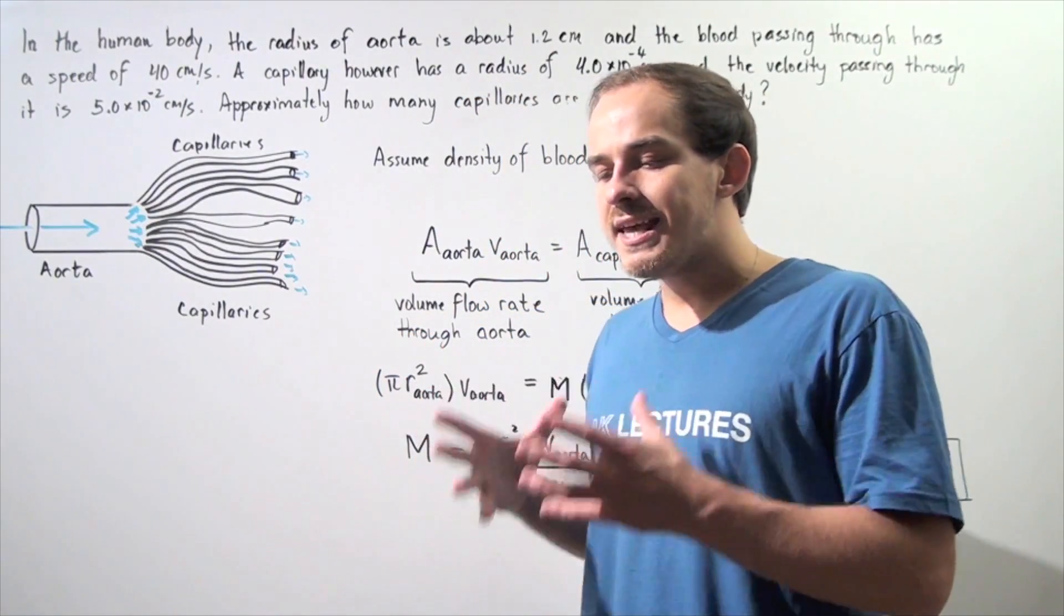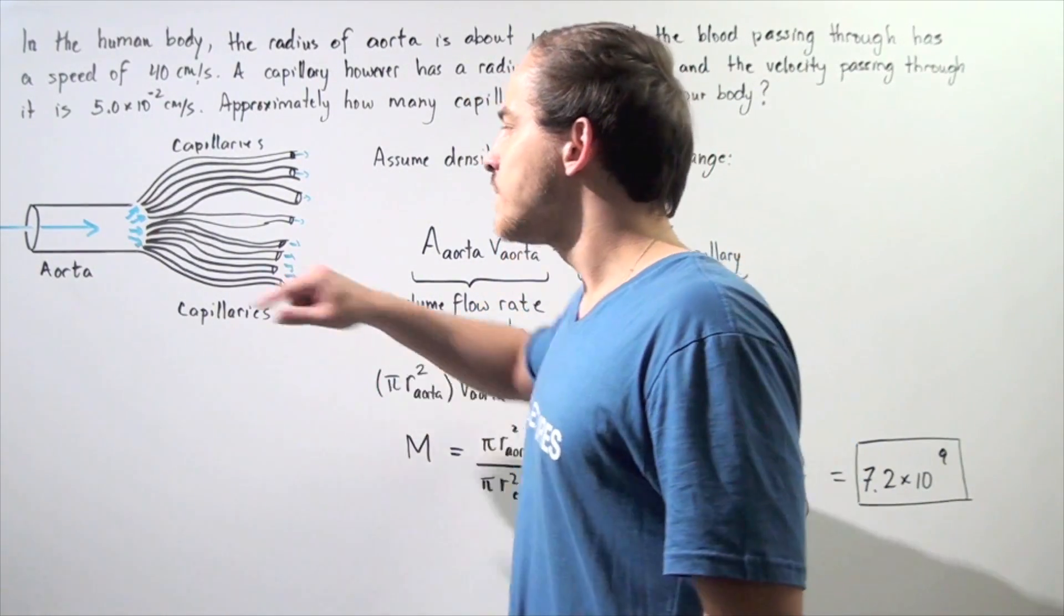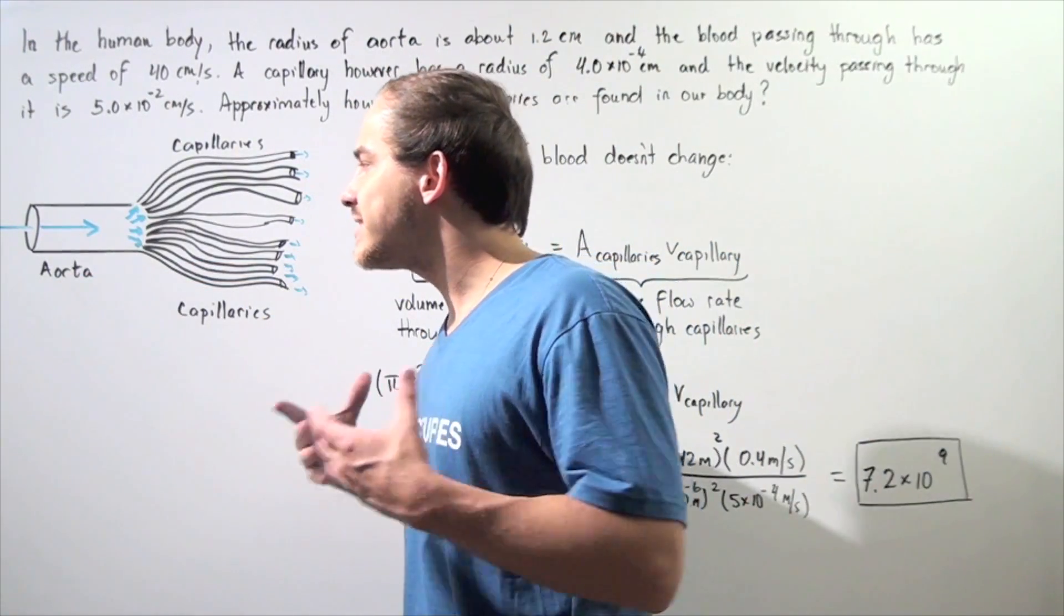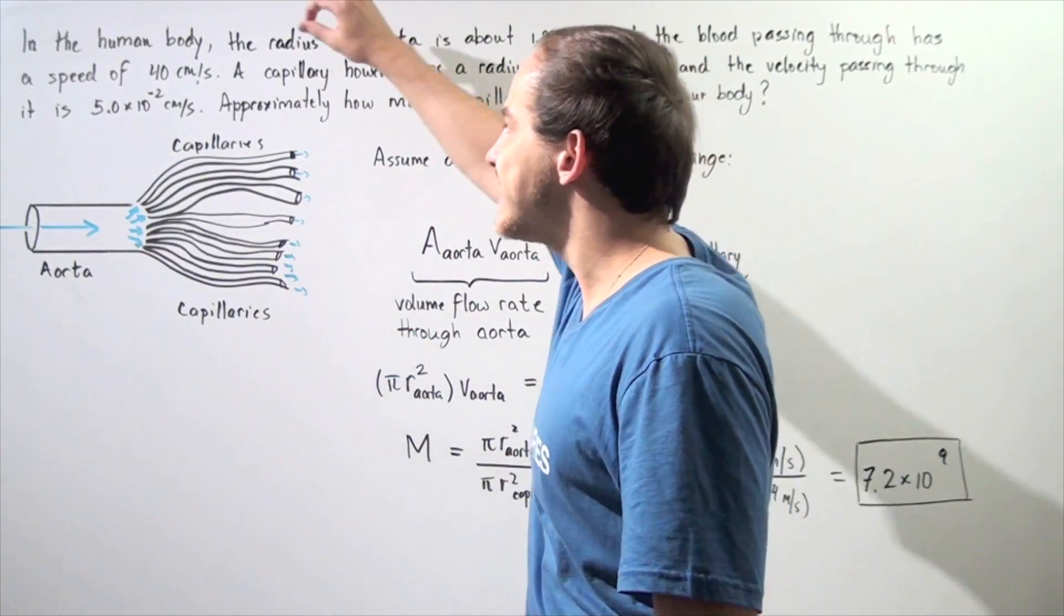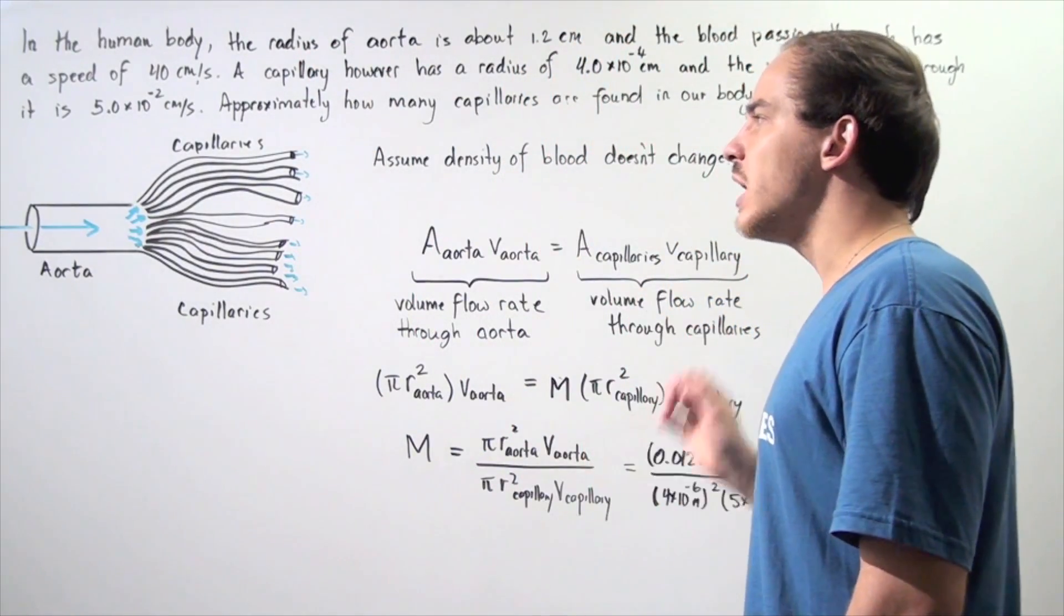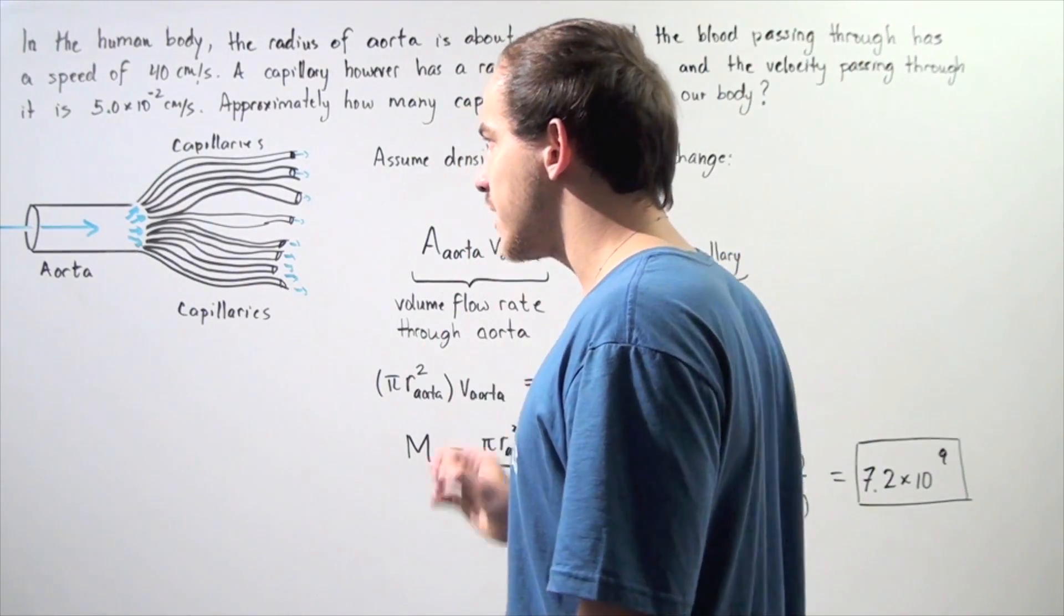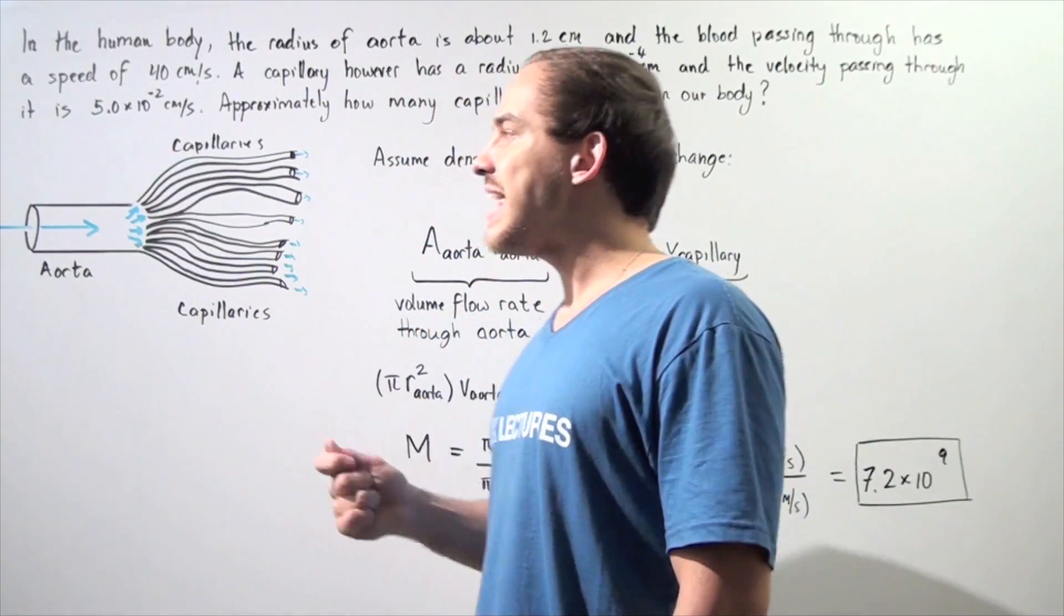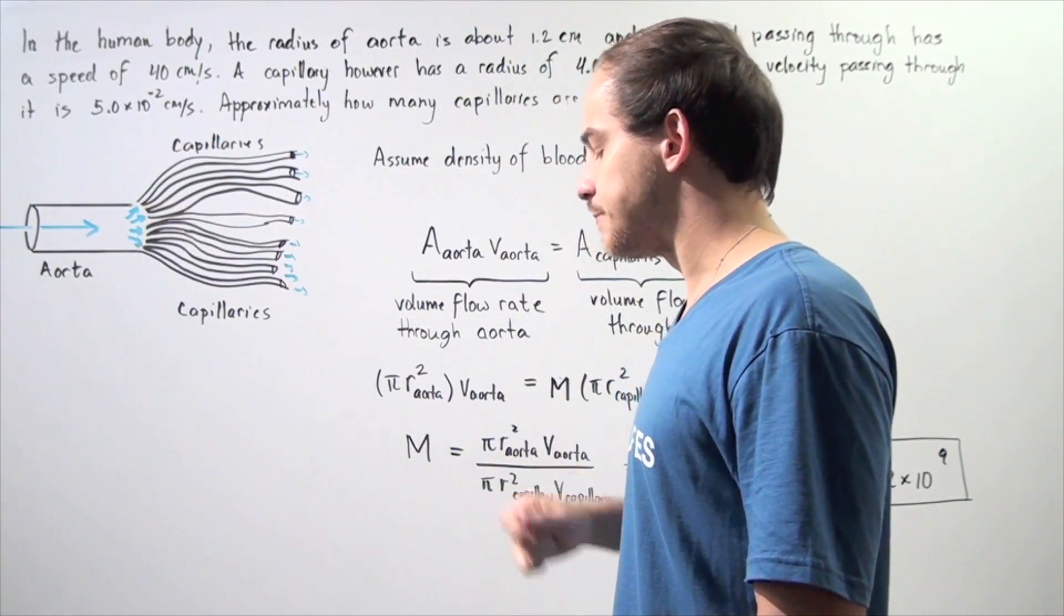The blood begins in the heart and travels through a single blood vessel known as the aorta. And then, that aorta divides and subdivides into many different small blood vessels known as capillaries. Capillaries are the smallest possible type of blood vessels found in our body. And in fact, it is within the capillaries that oxygen exchange and waste and nutrient exchange takes place between the organs and tissues and our blood vessels.